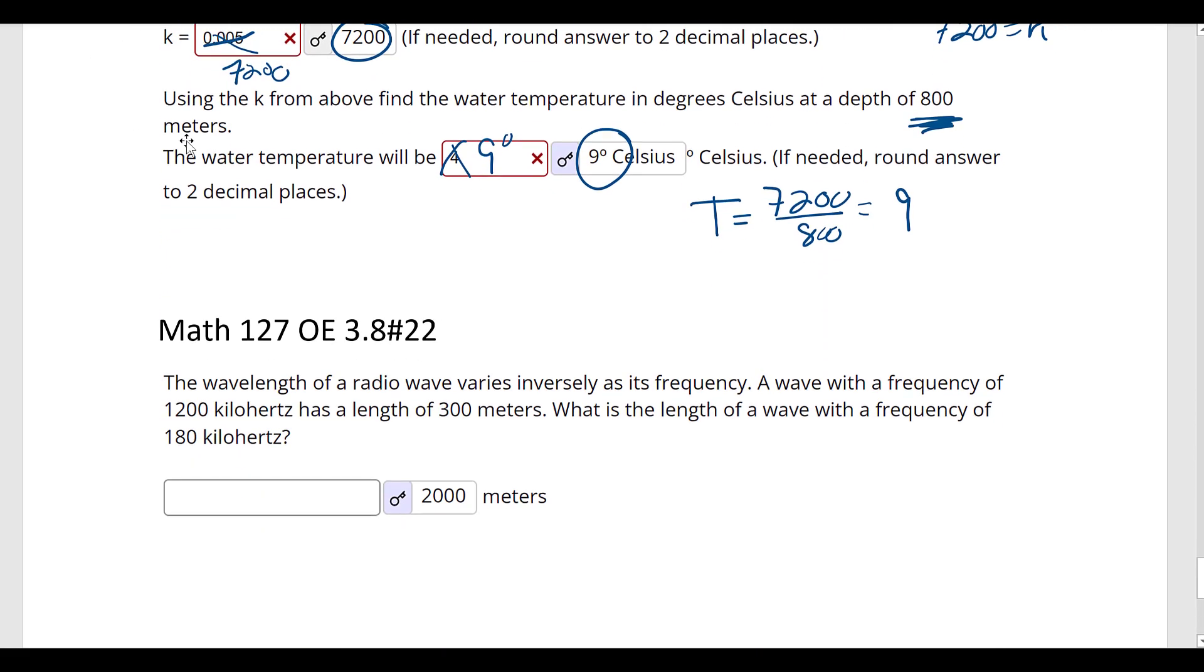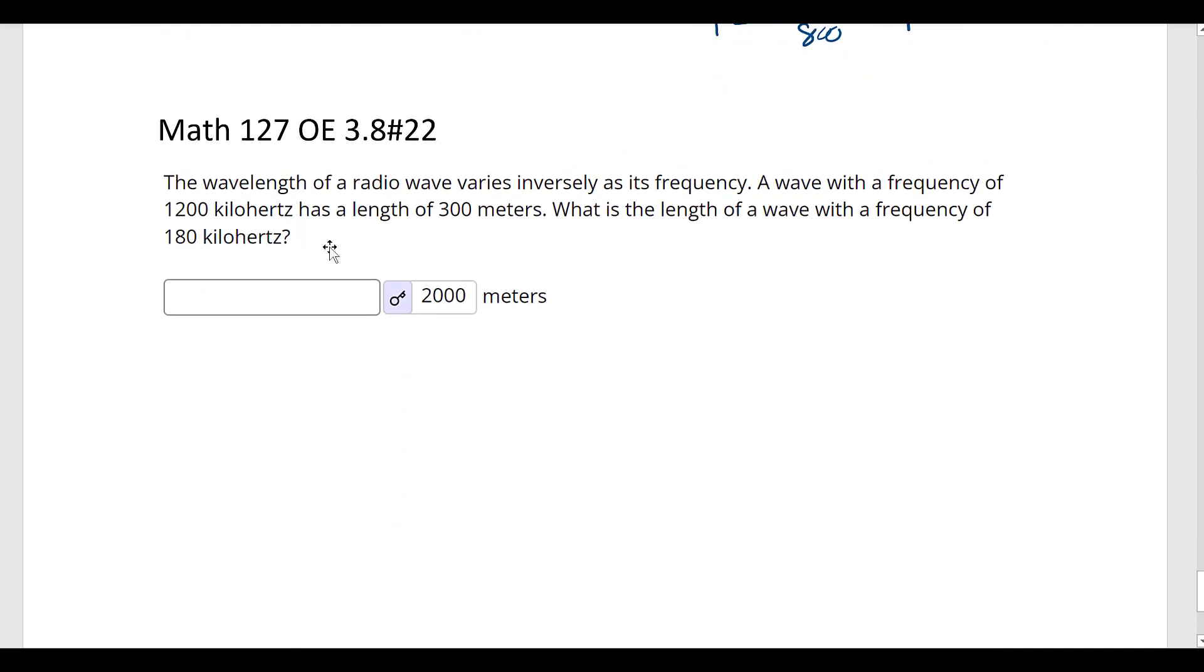Moving on. The wavelength of a radio wave varies inversely as the frequency. I can go on for a long time talking about frequencies and wavelengths. A wave with a frequency of 1,200 kilohertz has a length of 300 meters.